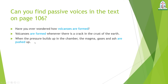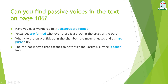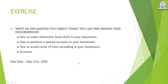The third passive voice example: 'When the pressure builds up in the chamber, the magma, gases, and ash are pushed up' — 'are pushed up' is passive. The last passive example: 'The bright hot magma that escapes to flow over the earth's surface is called lava' — 'is called' uses auxiliary 'is' and past participle 'called.' If you want to read the full text, please read and understand the example on page 106.